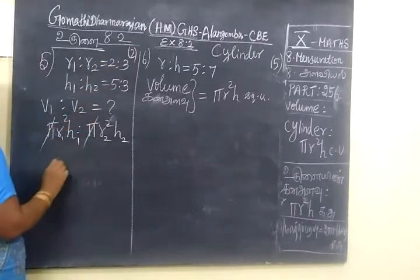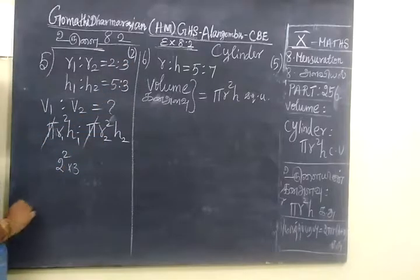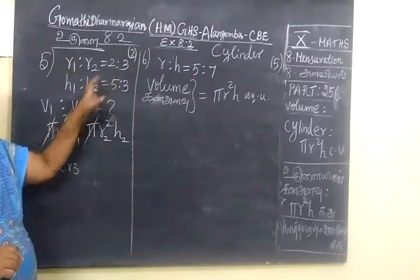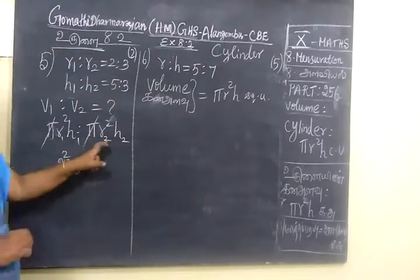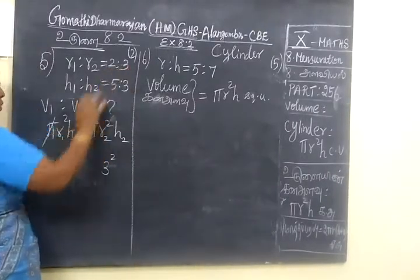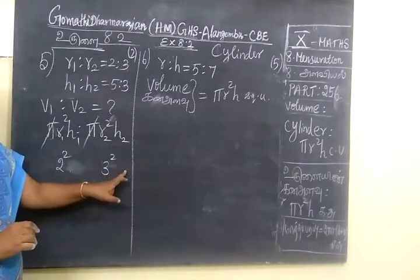R1 squared means 2 squared. R1 is to R2, so R1 is 2, R2 will be 3. The students are making mistakes. Cheating with 2 and 3 will be updated.